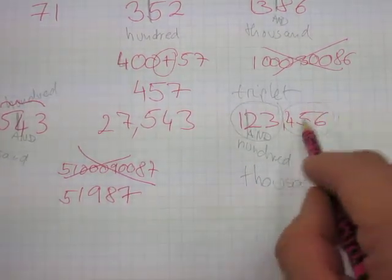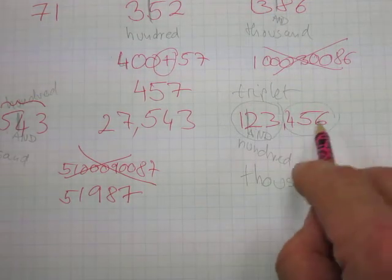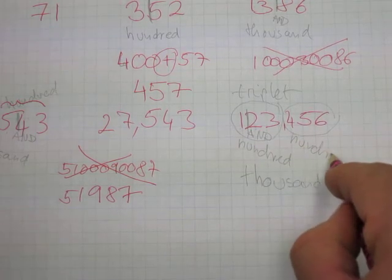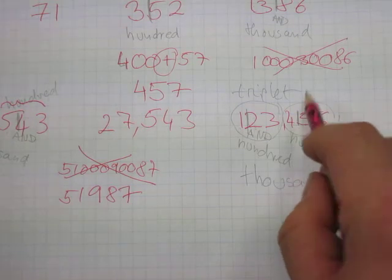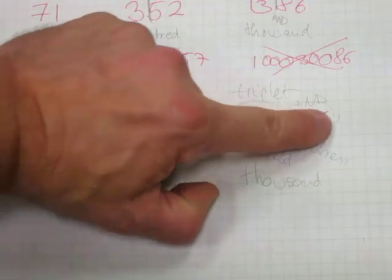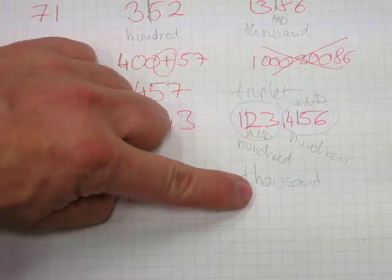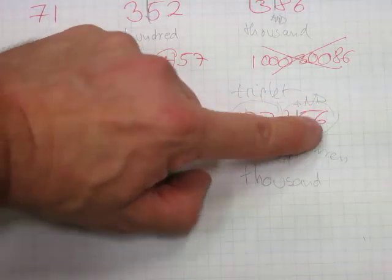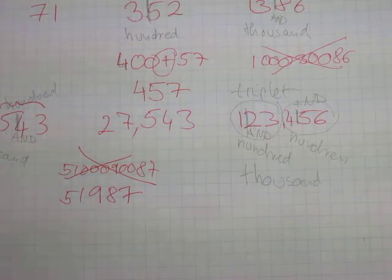So the full number reads as 'one hundred and twenty-three thousand, four hundred and fifty-six.' You can also read it without the word AND — just 'one hundred twenty-three thousand, four hundred fifty-six.' Both are acceptable depending on dialect.